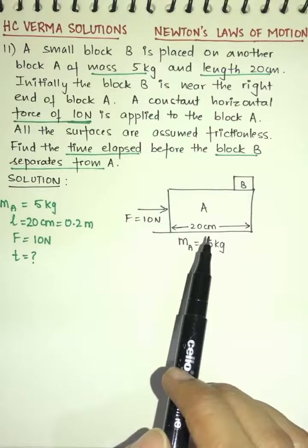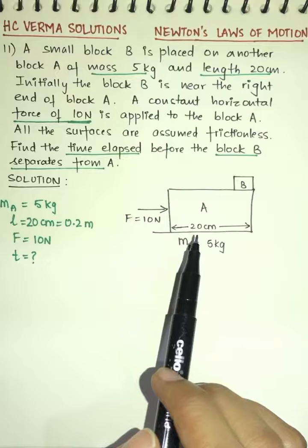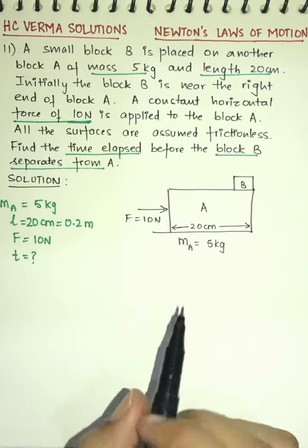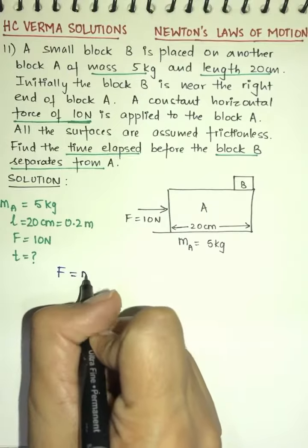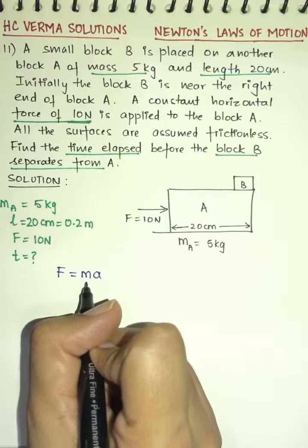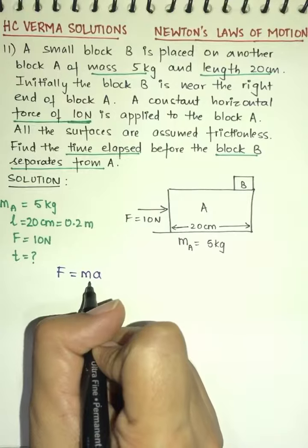To calculate this time, we first need the acceleration of block A. To find this acceleration, we will use the equation F = ma, where m is the mass of block A.